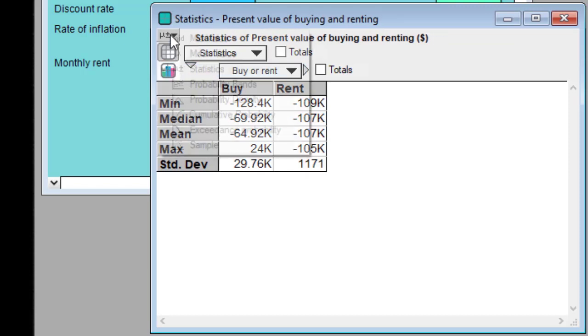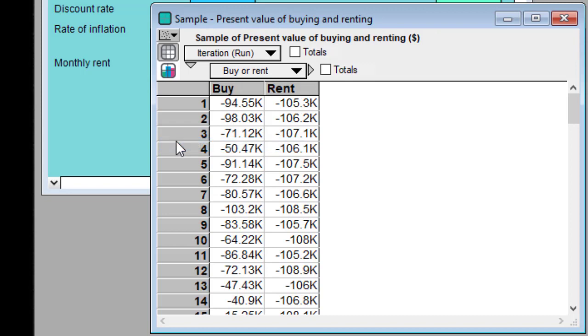And finally, we can look at the actual sample value. So here we're seeing 100 randomly generated scenarios showing what the cost of buying and renting were in each scenario.